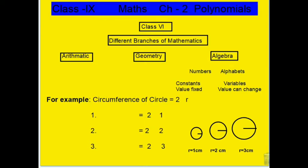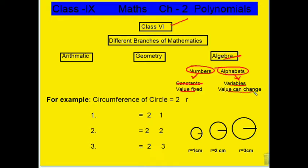let's go back a little to Class 6, from where we started a different mathematical branch named Algebra. In Algebra, we deal with numbers and alphabets. Here, numbers are called constants and alphabets are called variables. Constants means fixed value and variables means value can change, can vary.